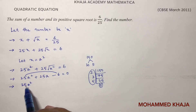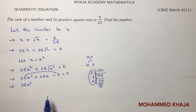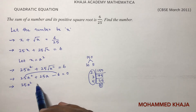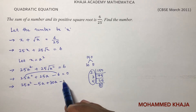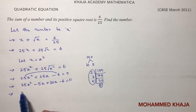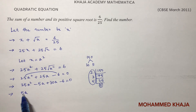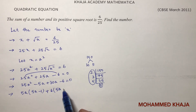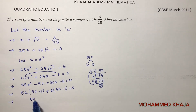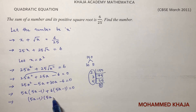So write 25a squared minus 5a plus 30a minus 6 equals 0. In the first two terms take 5a common: 5a(5a minus 1). In the last two terms take 6 common: 6(5a minus 1). So next step: take (5a minus 1) common, leaving (5a plus 6).